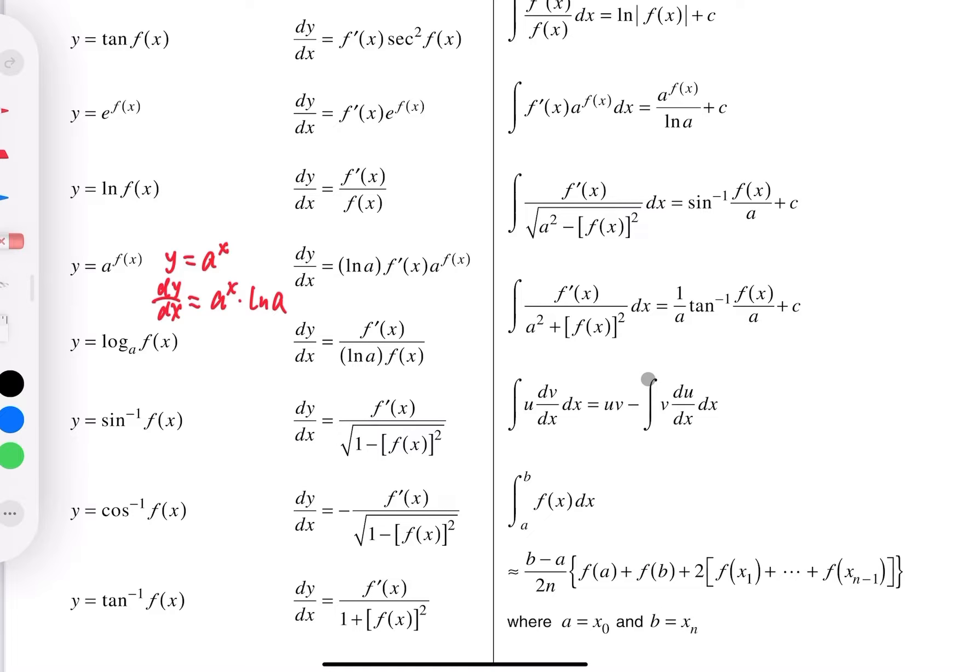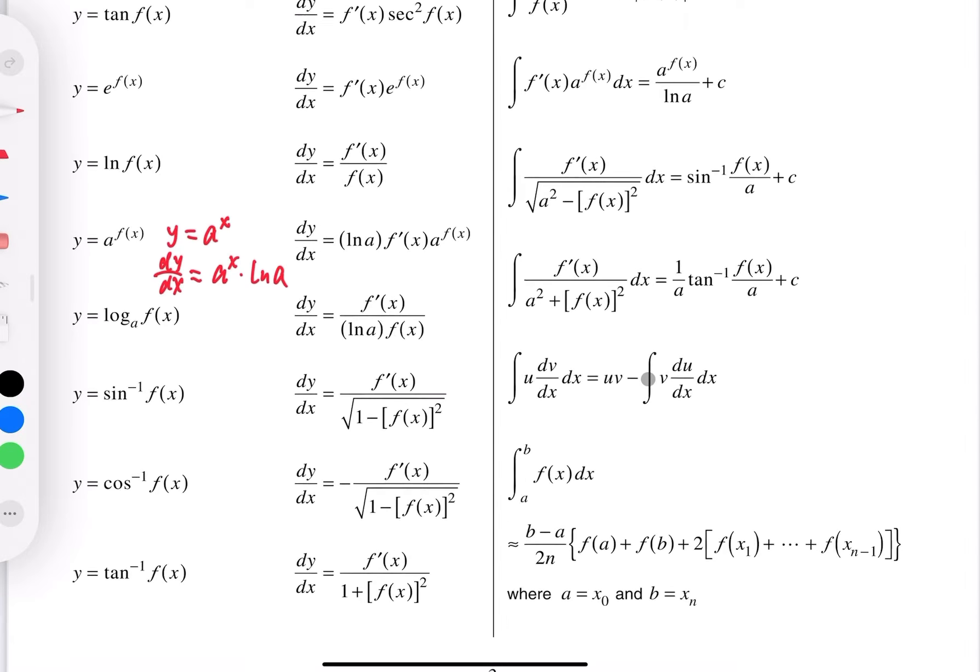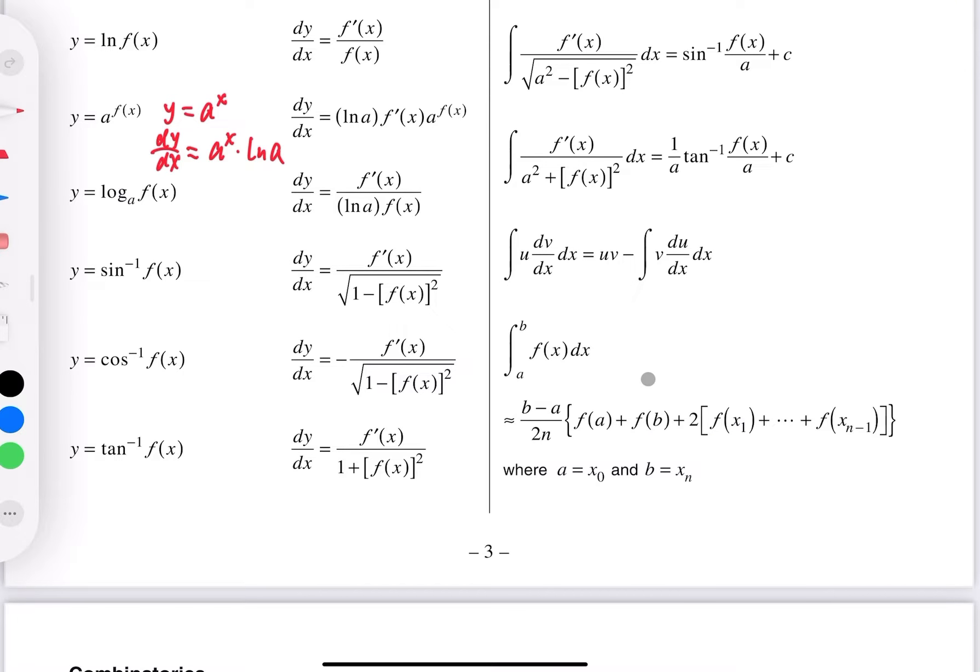And the next one is log. It's pretty simple. If its base is not e, then we change base and derivative. So it's also pretty clear, the formula here.